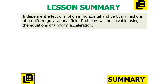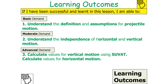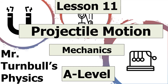In this lesson we covered the independent effect of motion in horizontal and vertical directions within a uniform gravitational field, and problems solvable using equations of uniform acceleration. To summarise, we should now be able to understand the definitions and assumptions for projectile motion, understand the independence of horizontal and vertical motion, and calculate values for both vertical motion using SUVAT and horizontal motion. Thank you very much for watching this lesson on projectile motion, part of the mechanics topic in AQA A-level physics. Have a lovely day.